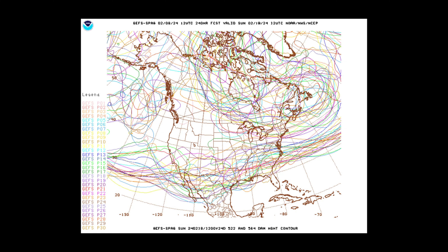Fast forward to the 240-hour forecast — it looks like I just threw spaghetti all over this image. Once those contours become too jumbled, or appear as if someone forgot to mix the spaghetti and got it all tangled, it becomes very hard to figure out what the potential pattern could be for this forecast hour.